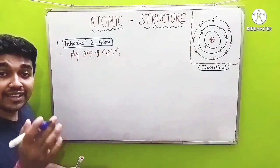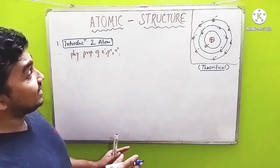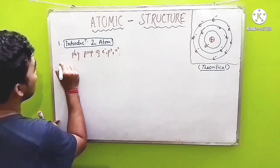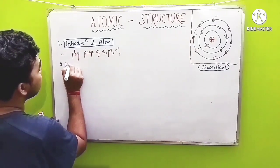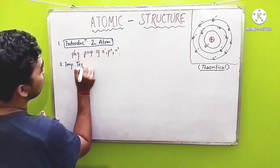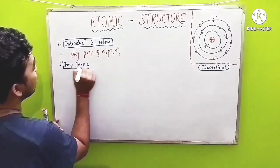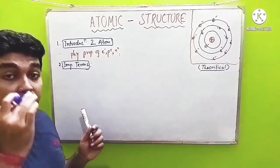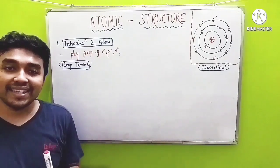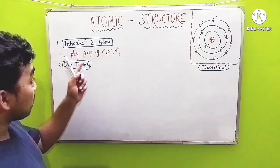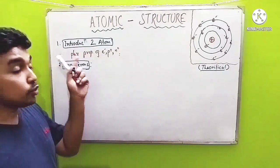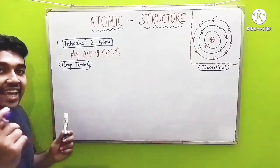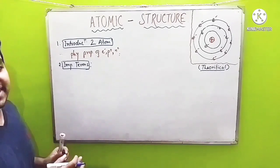On the next part, you will learn different types of terms related to the atomic structure. Number two is important terminologies regarding atomic structure. Here, you will find a lot of numericals in your question paper from this part, and this will be covered in my second lecture.